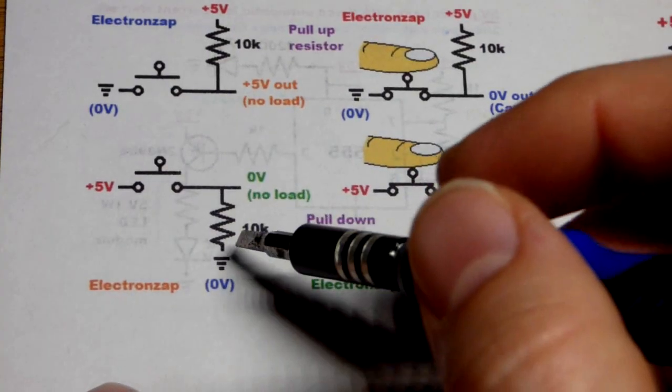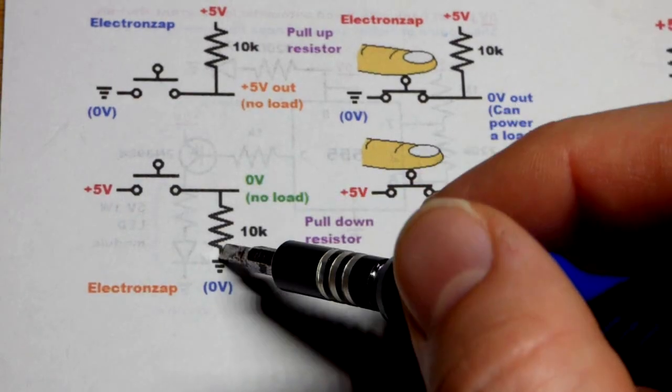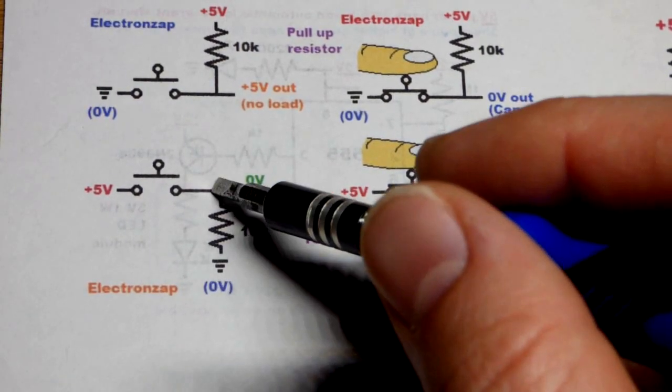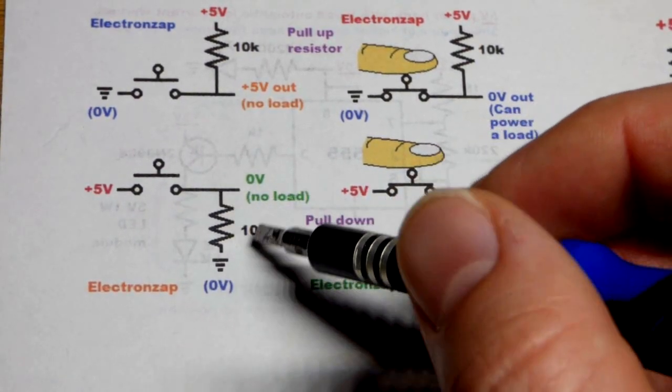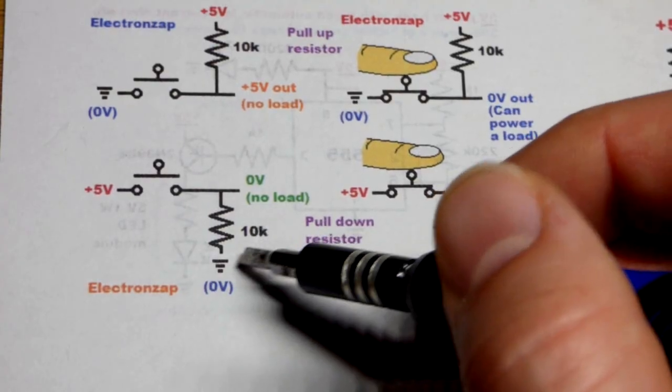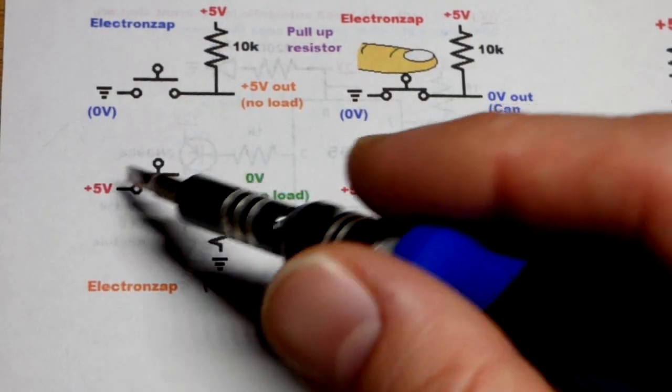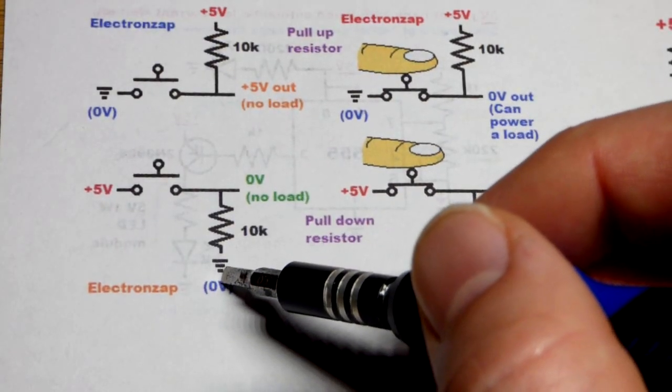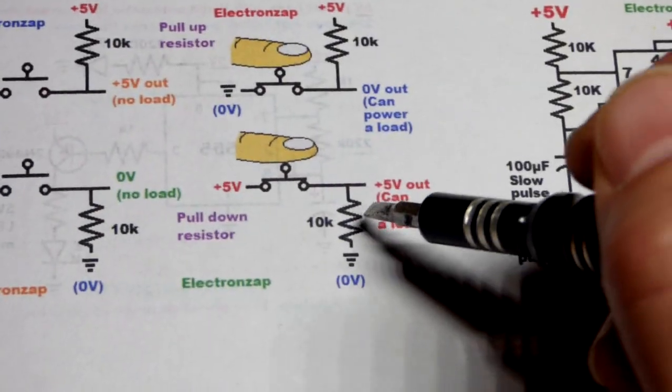And of course, you can get the opposite voltages. Put a pull-down resistor. A resistor connected to the negative supply right there. Again, exact value doesn't matter. But when the switch is closed, you're going to have waste current. And so 10K usually works pretty well.